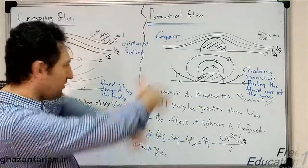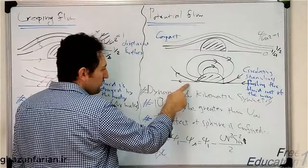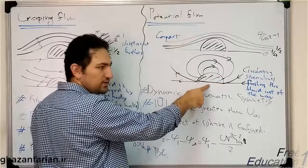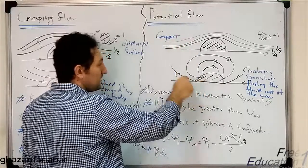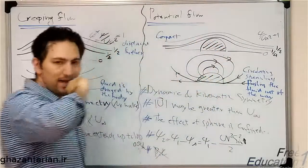So a fluid particle here is pushed away from the path of the sphere and experiences a circulating path.